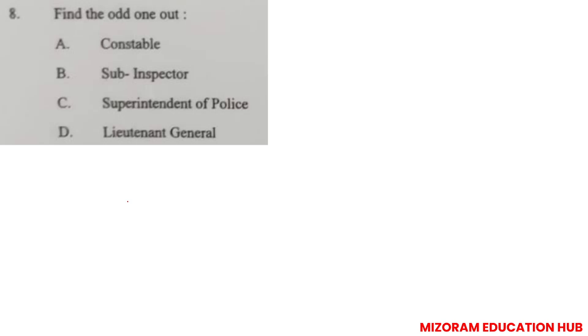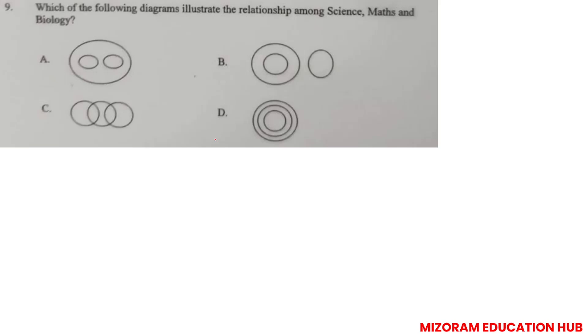Question number 8: Constable, Sub-inspector, Superintendent of Police, Lieutenant General. In this case, constable, sub-inspector, and SP are police ranks under police services. Lieutenant General is a military rank. That's why it is odd.